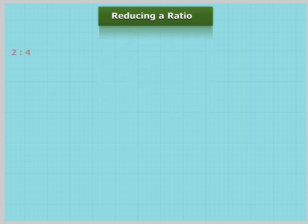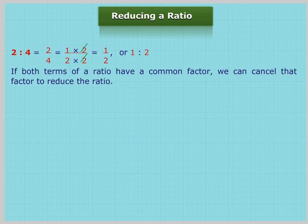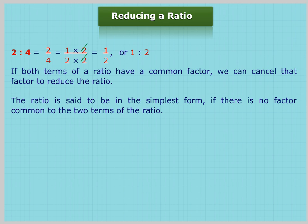Reducing a Ratio: Ratio of 2 to 4 equals 2 upon 4, which equals (1×2) upon (2×2), which equals 1 upon 2, or ratio of 1 to 2. If both terms of a ratio have some common factors, we can cancel the highest common factor to reduce the ratio. The ratio is said to be in the simplest form if there is no factor common to the two terms of the ratio.